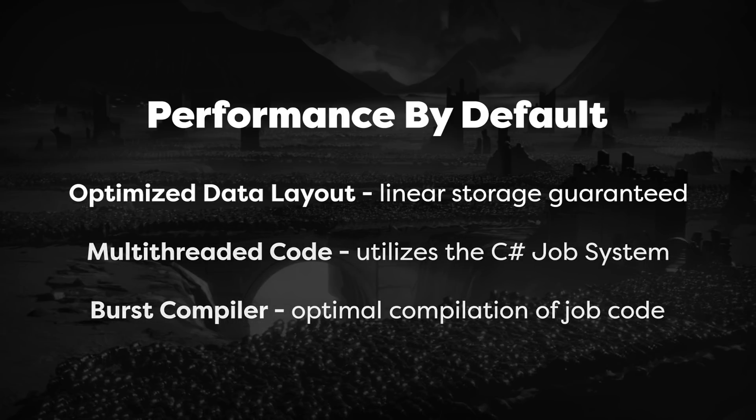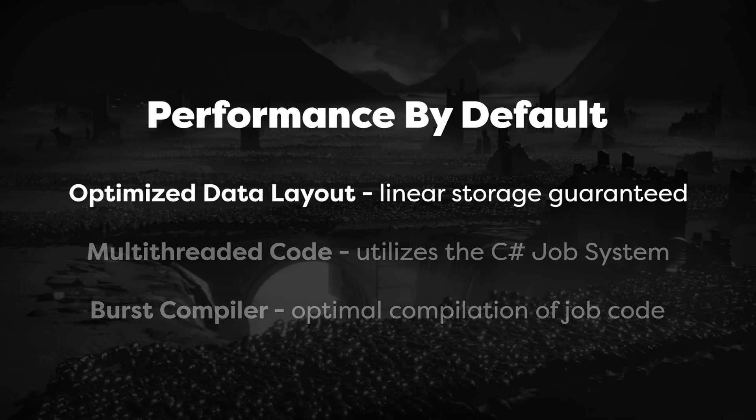The first is an optimized data layout. When you write your code using pure Unity ECS, your component data is guaranteed to be stored in memory linearly. This means that your systems will access entity components in the most optimal way possible. Data access just doesn't get much faster than that.